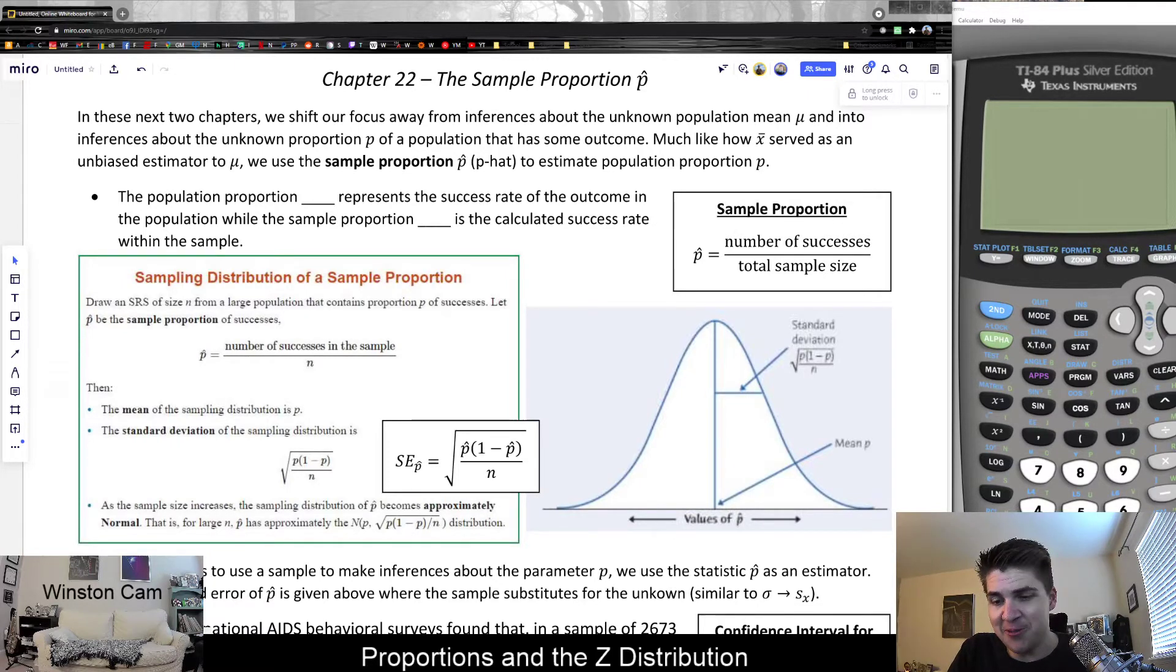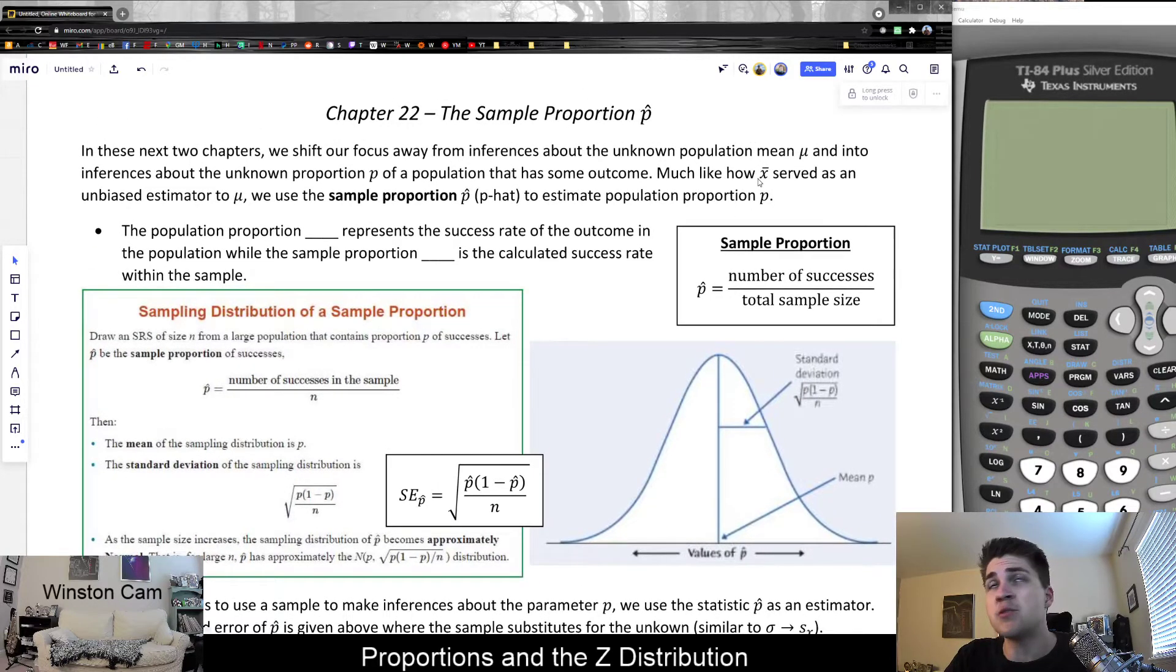We use the variable p to stand for the population proportion, and we use the variable p hat to refer to the sample proportion. This is sort of like with a population mean, we use x bar to represent our sample mean.